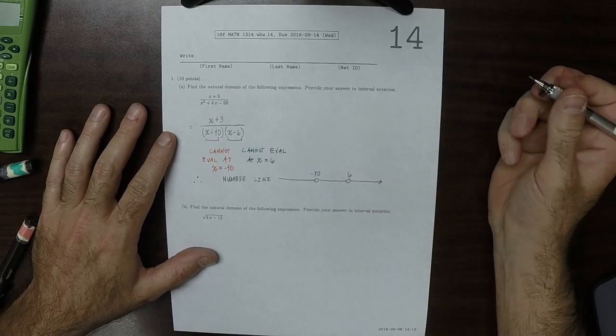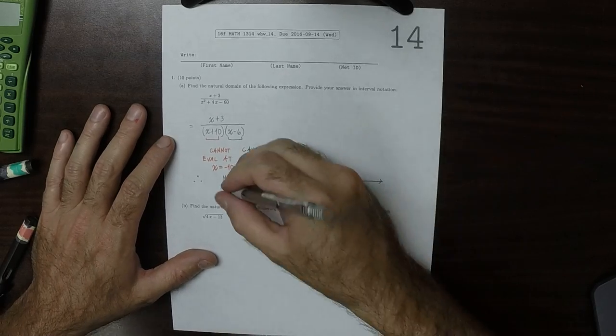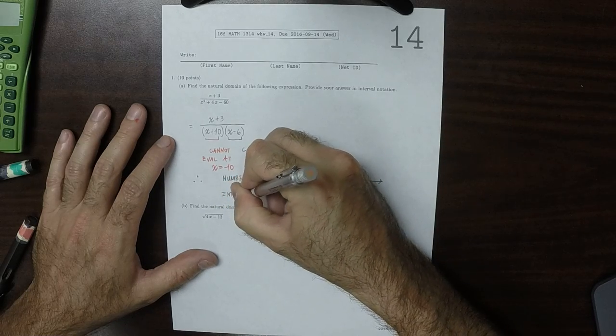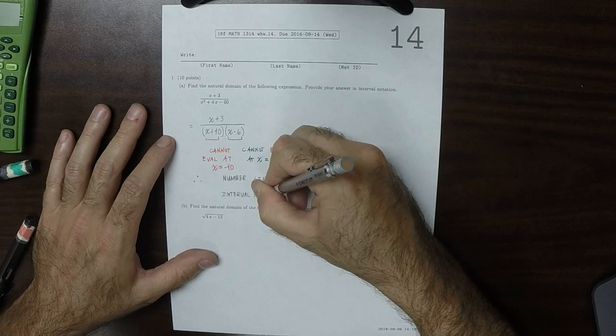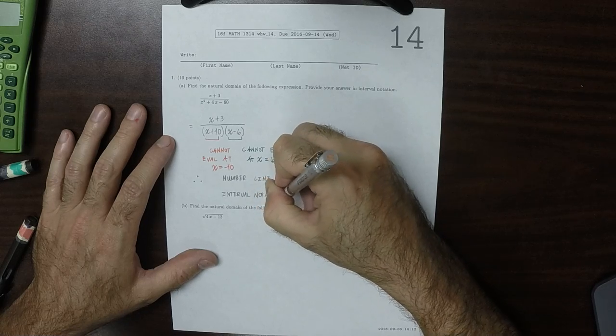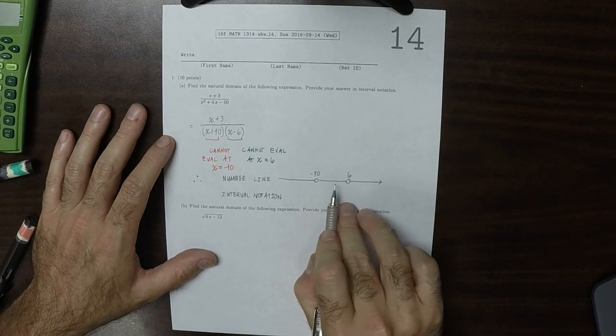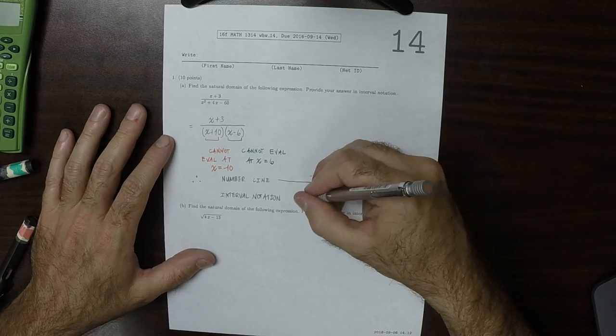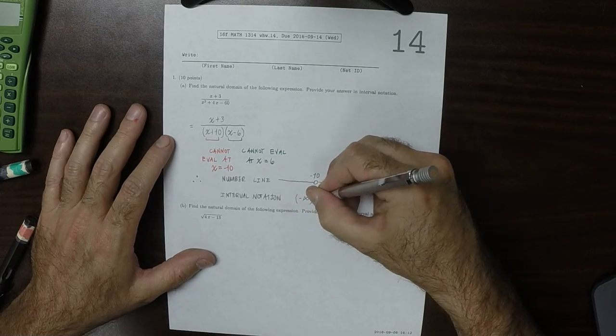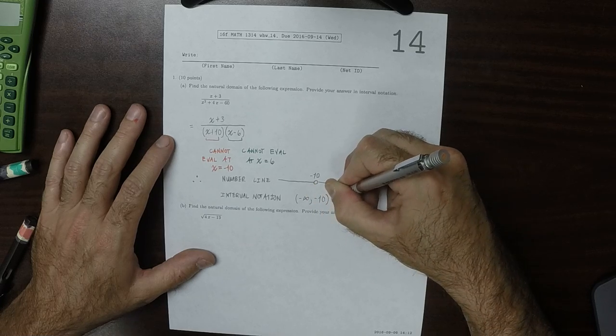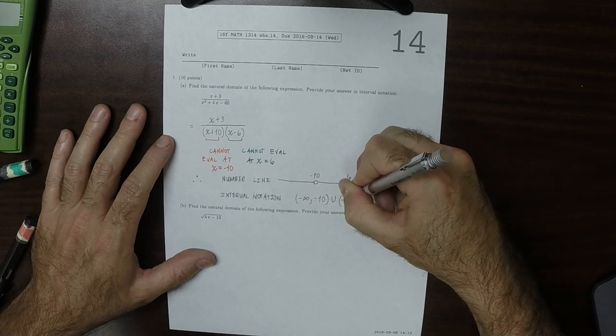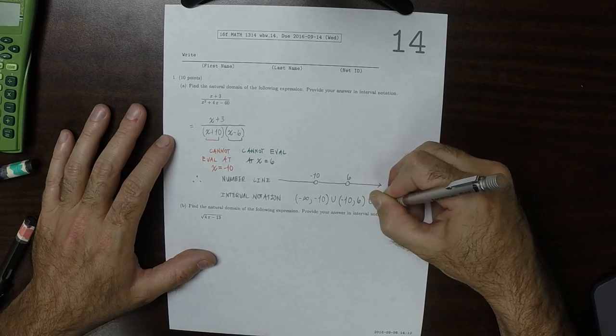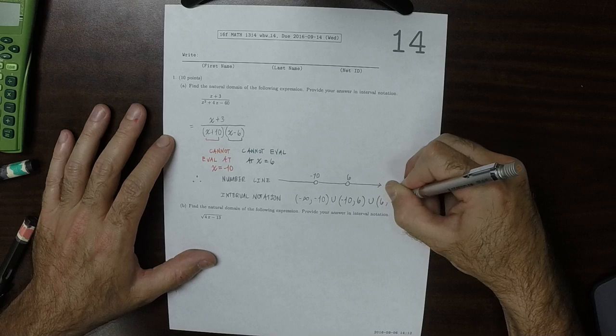and the point 6 is deleted. And in interval notation, that's this interval union, that interval union, that interval. So that would be negative infinity to negative 10, union, negative 10 to 6, union, 6 to infinity.